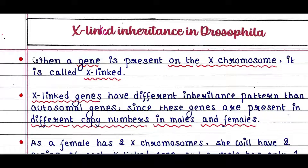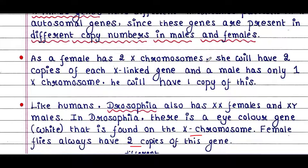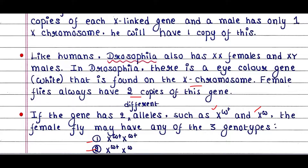Males have only one X chromosome but females have two X chromosomes, while the autosome number is the same in both sexes. Since a female has two X chromosomes, she will have two copies of each X-linked gene, while a male has only one copy. Like humans, Drosophila also has XX females and XY males, and there is an eye color gene — the white eye color gene — found on the X chromosome.